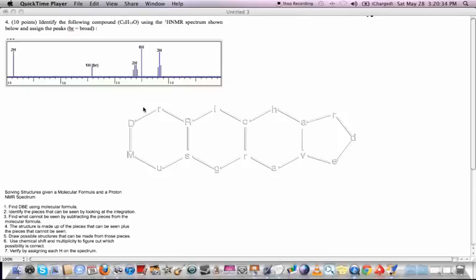I'd like to do an example of a proton NMR spectra problem. This one's from an old test, from the fall 2010 test. I'm going to use the seven-step method that I showed you earlier in the solving NMR problems mini-lecture.